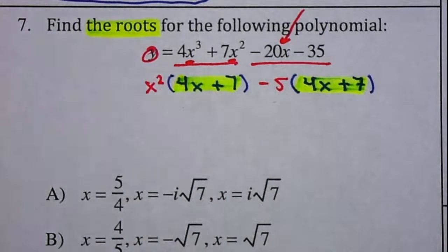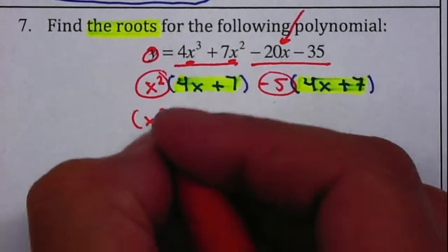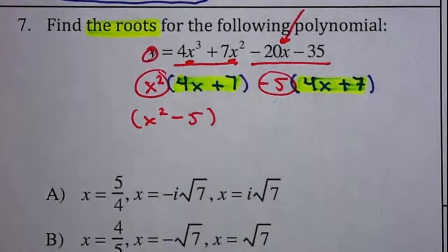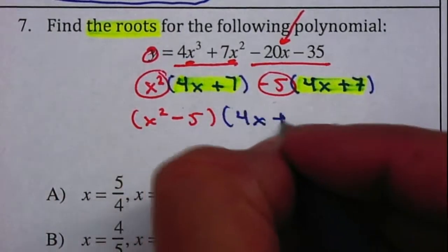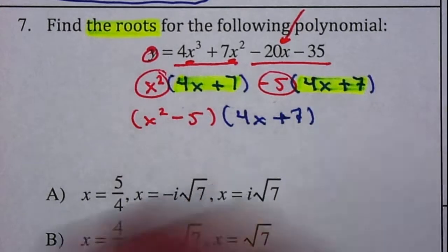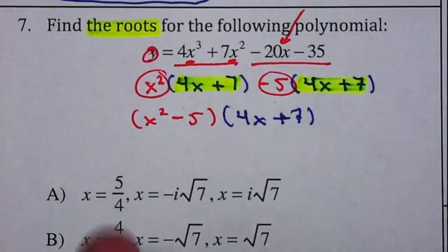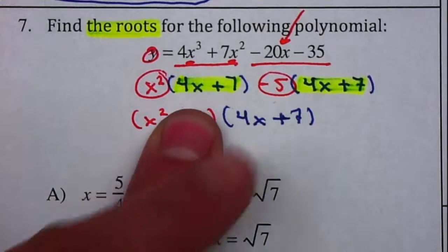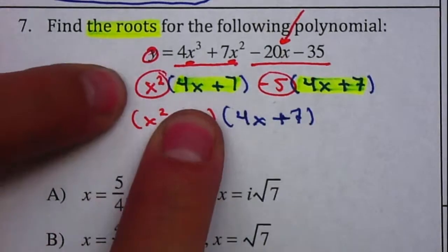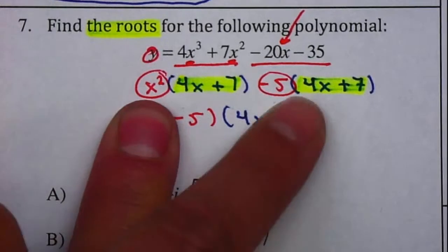Now we're going to group the x squared minus 5. And that 4x plus 7 gets written only once. This is basically just using the distributive property backwards. If I was going to multiply this out, I'll multiply the x squared times both, which is right here. And then I'll multiply the negative 5 times both, which is right here.